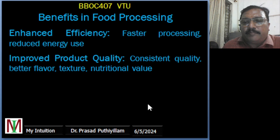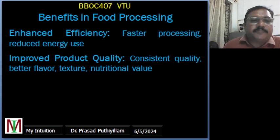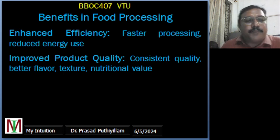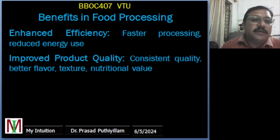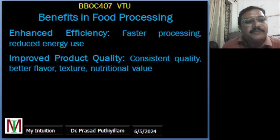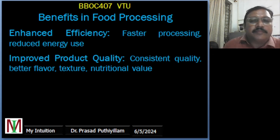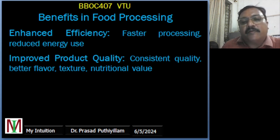The benefits of enzymes in food processing: first, enhanced efficiency — enzymes allow for faster processing times and reduce energy consumption compared to traditional methods, which improves production efficiency and reduces cost. Second, improved product quality — enzymes enable precise control over processing parameters, which leads to consistent product quality, enhanced flavor, texture, and nutritional values.